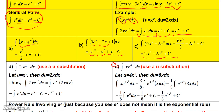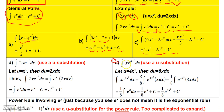Now here's one that has to be manipulated. I have e raised to a power, so I'll let u be 4x². Then du must be 8x dx, but there's no 8 in the integrand. I can multiply inside by 8 as long as I multiply outside by 1/8 — that's the trick we're allowed to use.